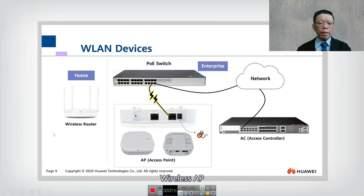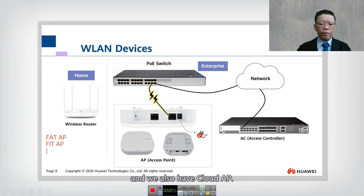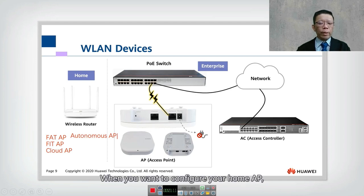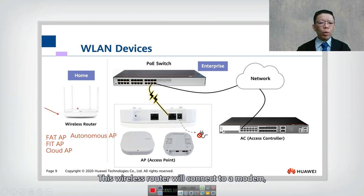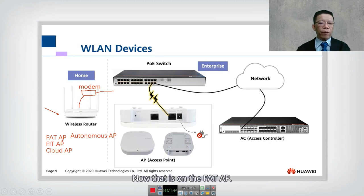Wireless APs are typically divided into three types: Fat AP, Fit AP, and Cloud AP. The Fat AP is also called an autonomous access point — autonomous means it is independent and does not need any additional controller. At home, you configure the wireless router directly. This wireless router connects to a modem for fiber or DSL connections. Fat AP is normally used at home.